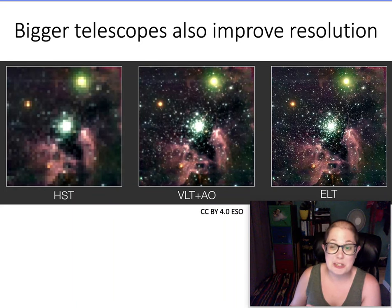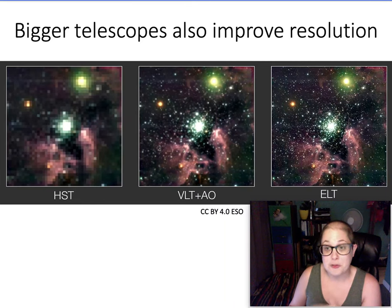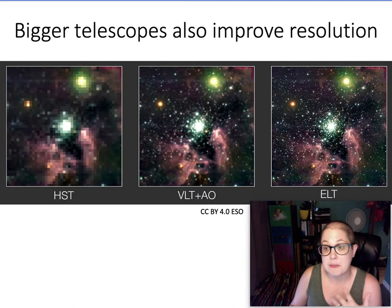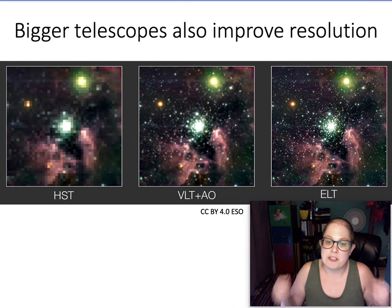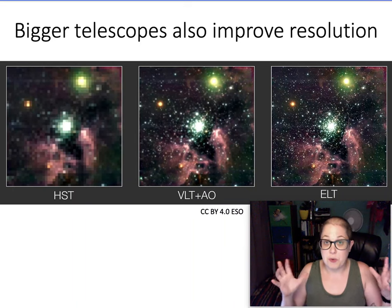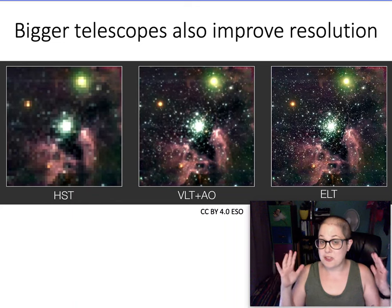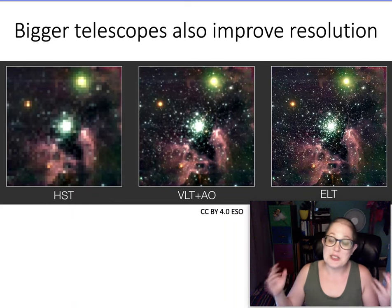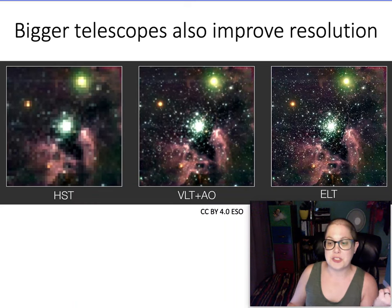The Hubble Space Telescope is an amazing telescope. It's in orbit around the Earth, so it's free from atmospheric effects, which is great. It's actually not that big of a telescope, but some of the larger ground-based telescopes, by being larger, can get finer and finer detail. You want a big telescope for a lot of light-gathering power, and you also want a big telescope to improve your resolution — to see finer details.